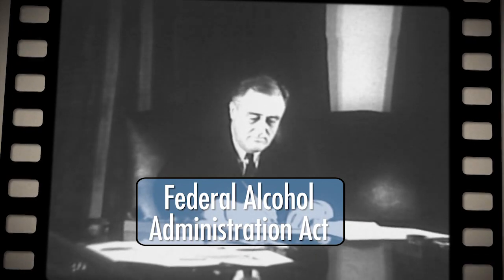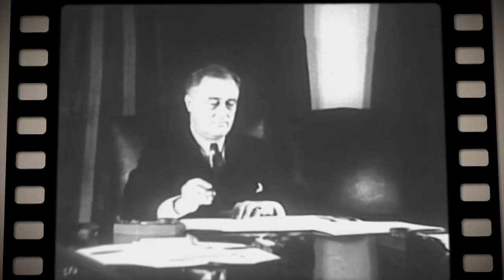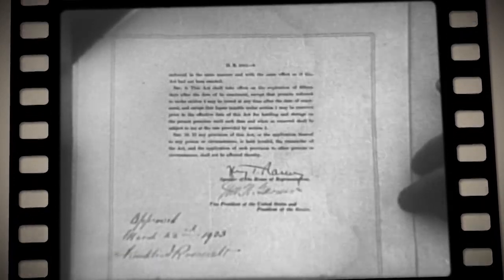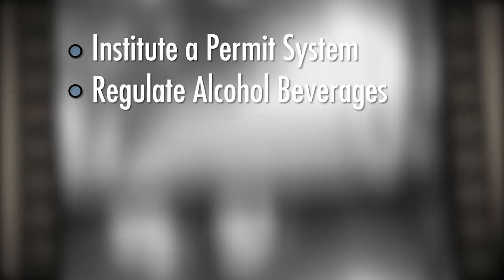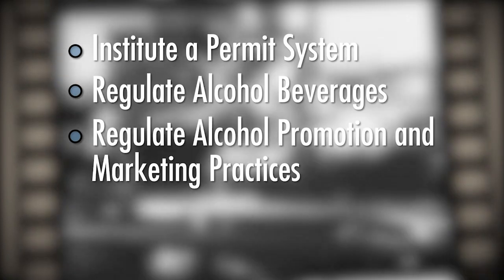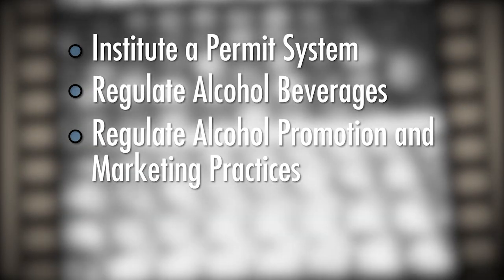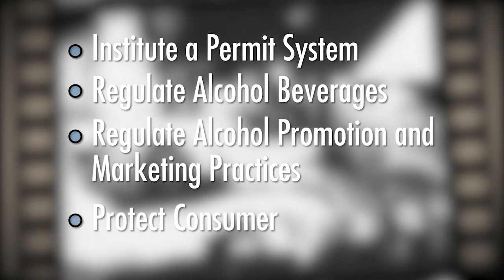Their solution was to enact the Federal Alcohol Administration Act. The Federal Alcohol Administration Act, or FAA Act, was signed into law by President Roosevelt in 1935. Its goals were to keep the criminal element out of the alcohol industry and maintain compliance by using the permit system, regulate the formulation, labeling, and advertising of alcohol beverages, regulate the promotional and marketing trade practices that might lead to corruption or excessive consumption, and protect the consumer.